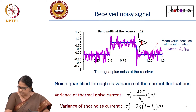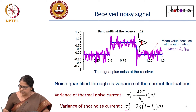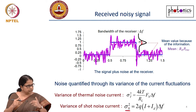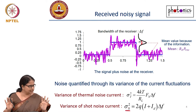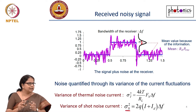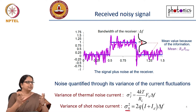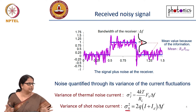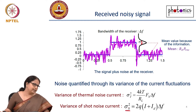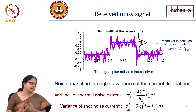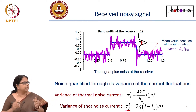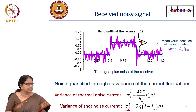Even though shot noise statistics is Poissonian, we assume a Gaussian distribution. We approximate that Poisson becomes Gaussian for large photon numbers — in fact, for n greater than 100, the Poisson distribution actually becomes a Gaussian distribution. This is valid as long as the photon number is large, which is the case in regular communication systems.